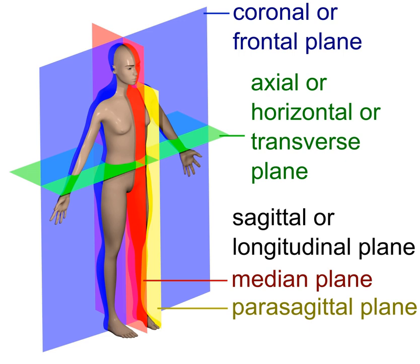A coronal plane is any vertical plane that divides the body into ventral and dorsal, belly and back sections. It is one of the three main planes of the body used to describe the location of body parts in relation to each other.